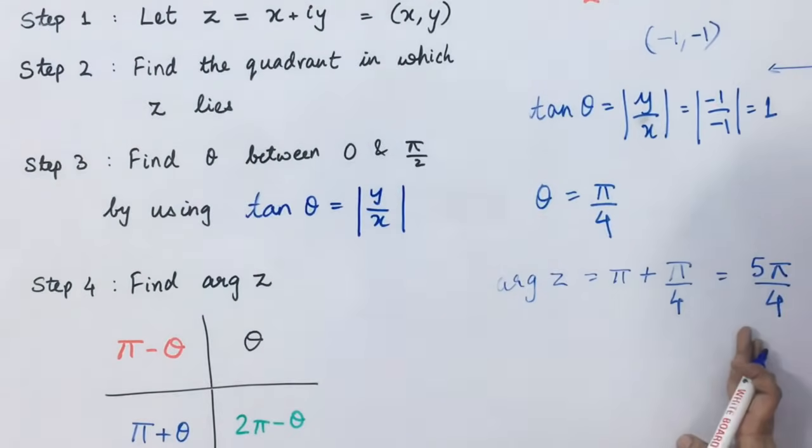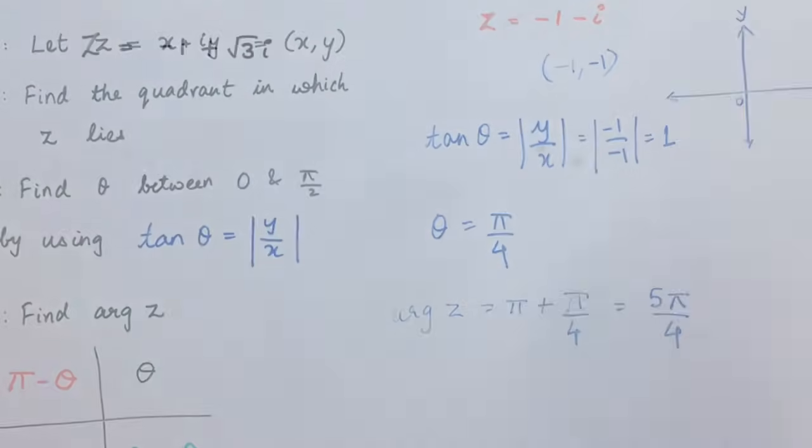So, this is going to be the value for argument z. Let's look at one example.